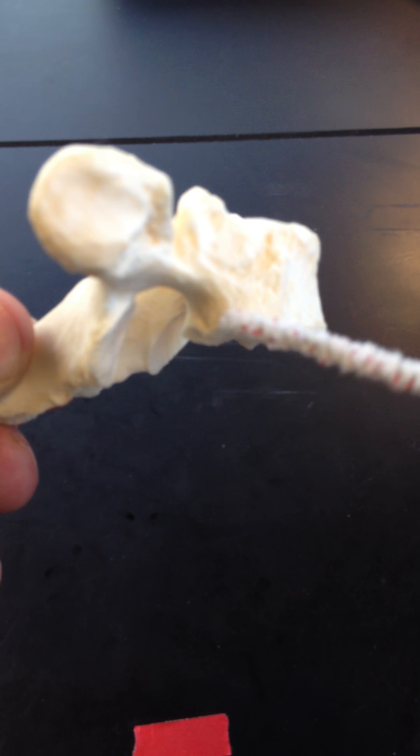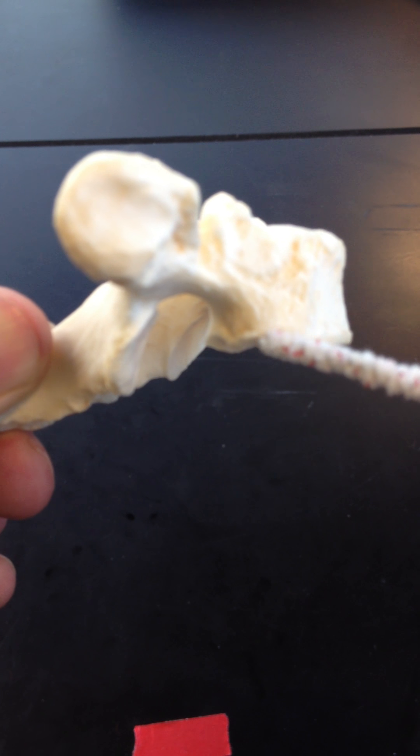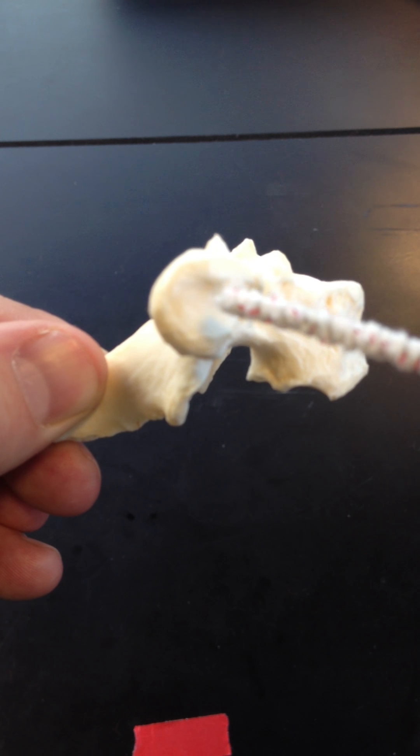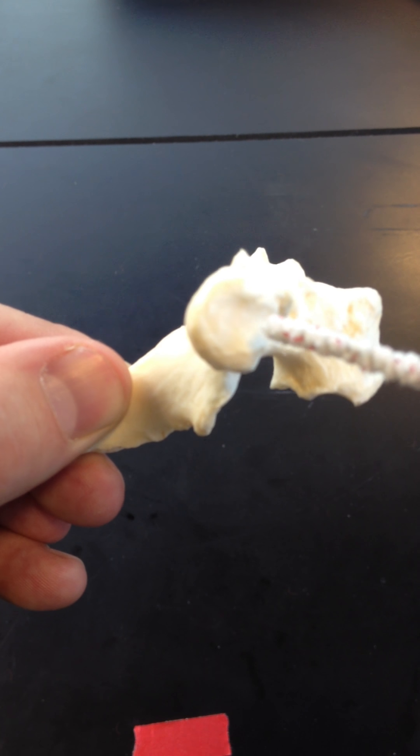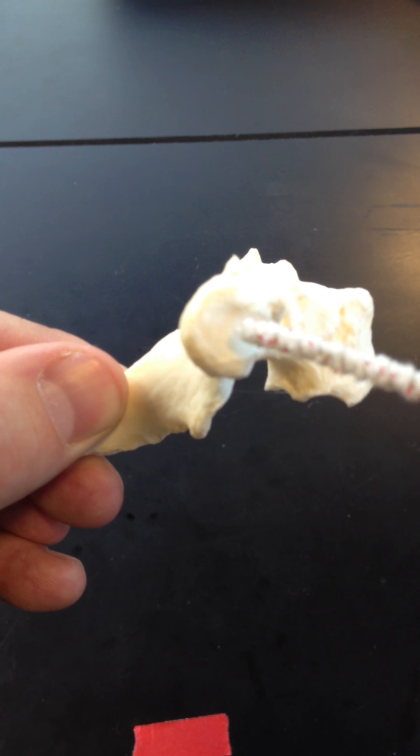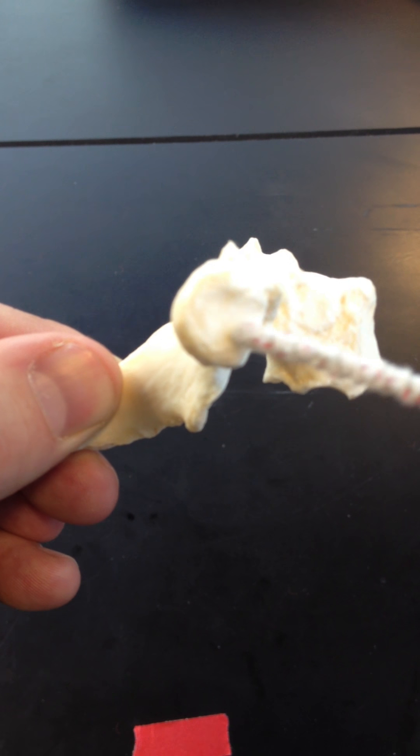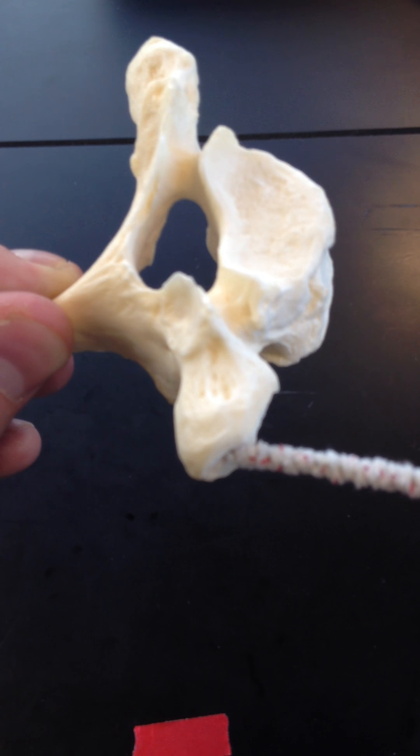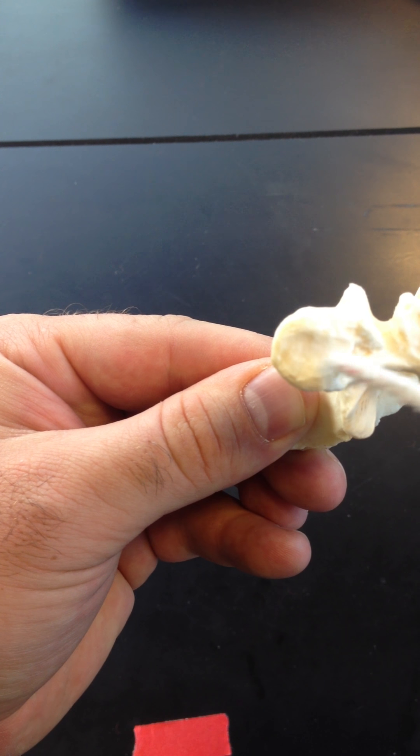Rib number two, the upper part of that rib's head articulates with this inferior demifacet. And then also, T1 through T10 are going to have transverse costal facets. So this is where the tubercle of the rib is going to articulate with the transverse process. You see how that facet is a little bit smoothed out there.